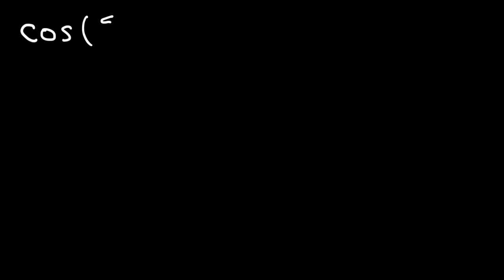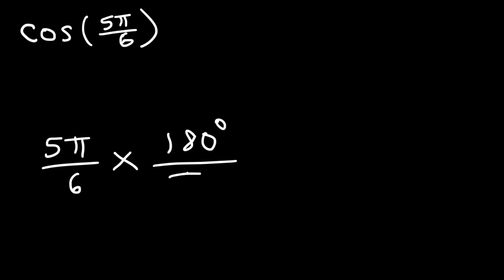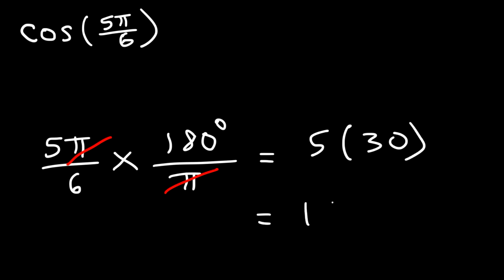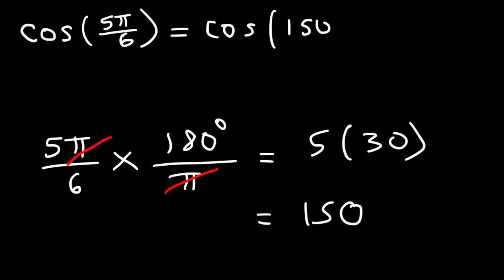Let's try cosine of 5π/6. First, convert to degrees: multiply by 180/π. The π cancels and 180/6 = 30, so 5 × 30 = 150°. So cosine 5π/6 = cosine 150°. Since 150° is in quadrant 2, we draw the triangle there. The reference angle is 180° − 150° = 30°.